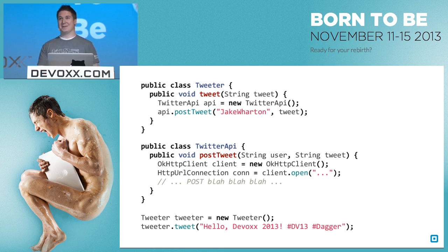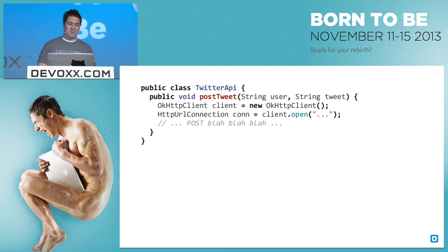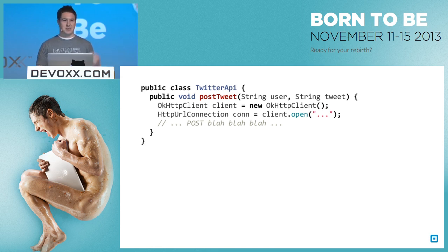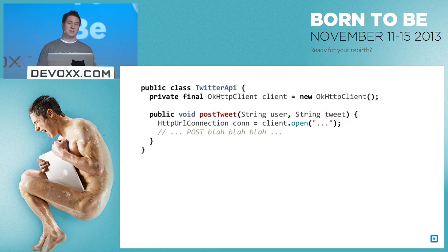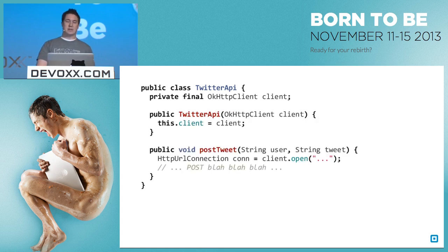Hopefully you're looking at this and thinking that this is really poorly coded, because it is. Let's clean it up a little. Starting with the Twitter API class, it's very obviously being wasteful because it's creating an HTTP client every time we call it. We can pull that out into a field. What would make this even better is if we pulled this out into the constructor and passed in the OkHttp client, because this allows us to customize it, install a disk cache, configure SSL, whatever.